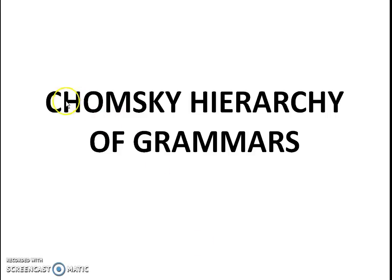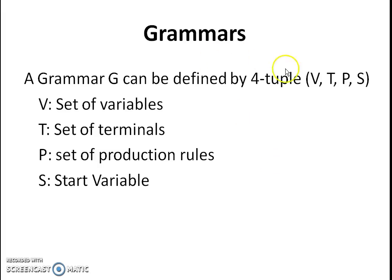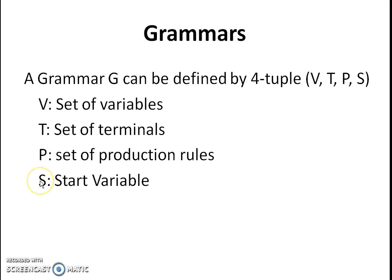The topic for today's discussion is Chomsky's Hierarchy of Grammars. As we have already discussed what a grammar is, let's have a brief look at grammar. Grammar is basically defined by a 4-tuple, that is V, T, P, S — where V stands for set of variables, T stands for set of terminals, P stands for set of production rules, and S stands for the starting variable.